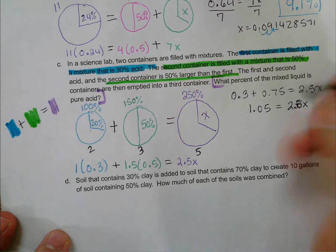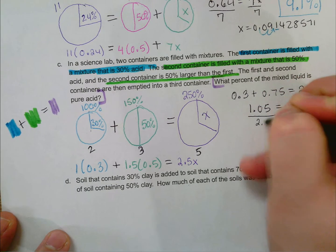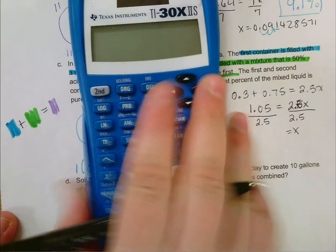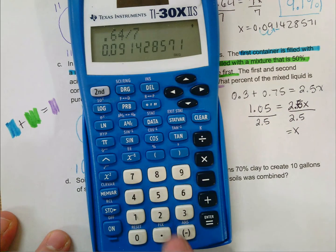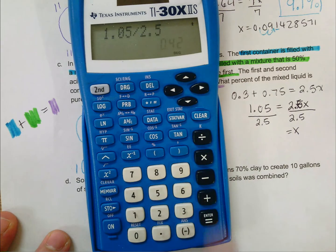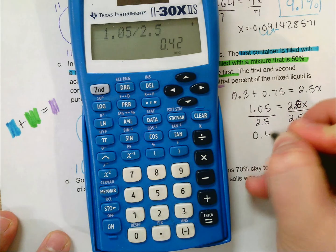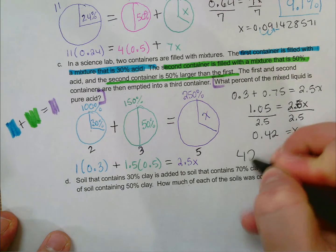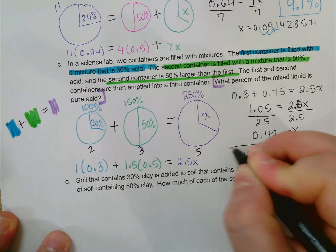To finish solving, I'll divide both sides by 2.5. That gives me x on the left, or x on the right, rather. And on the left, I'll have 1.05 divided by 2.5, which is 0.42. So that means 42% of our final mixture must be pure acid.